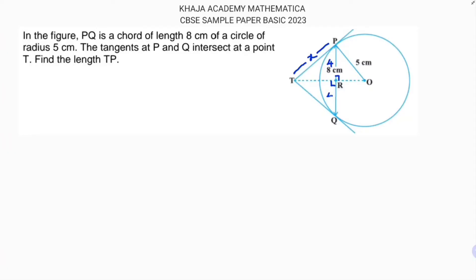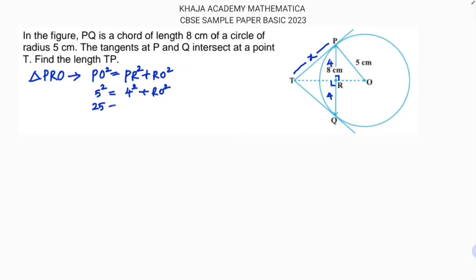I'll find the value of RO by applying the Pythagorean theorem for triangle PRO. The hypotenuse is PO, so PO² equals PR² plus RO². PO is 5, so 5² equals 4² plus RO². That gives 25 equals 16 plus RO², so RO² equals 9, and RO equals 3 centimeters.